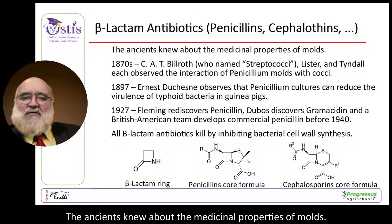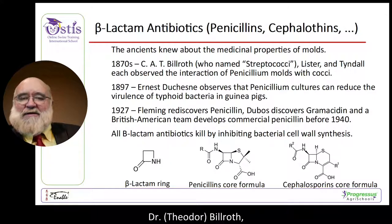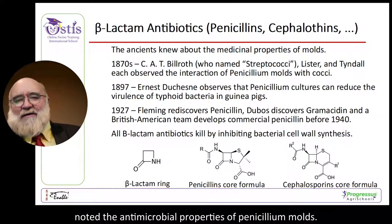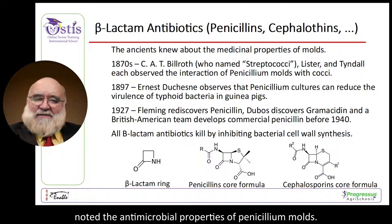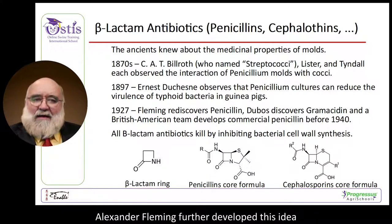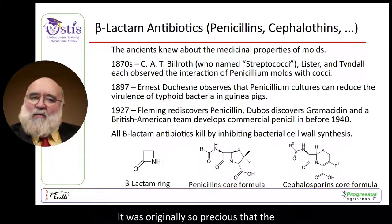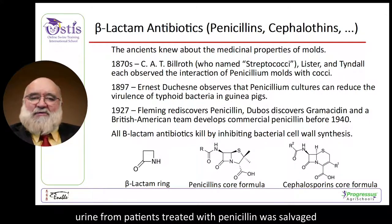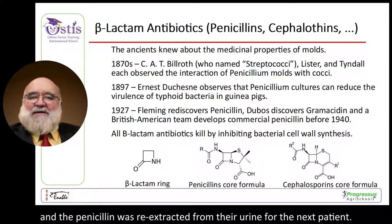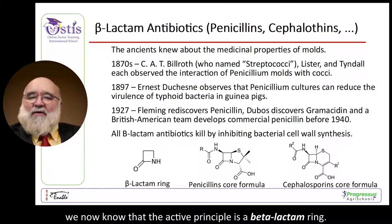The ancients knew about the medicinal properties of molds. The famous surgeon Dr. Bill Roth, among others, noted the antimicrobial properties of Penicillium molds. Alexander Fleming further developed this idea, and penicillin was developed into an antibiotic drug before 1940. It was originally so precious that urine from patients treated with penicillin was salvaged and the penicillin was re-extracted for the next patient. We now know that the active principle is a beta-lactam ring.